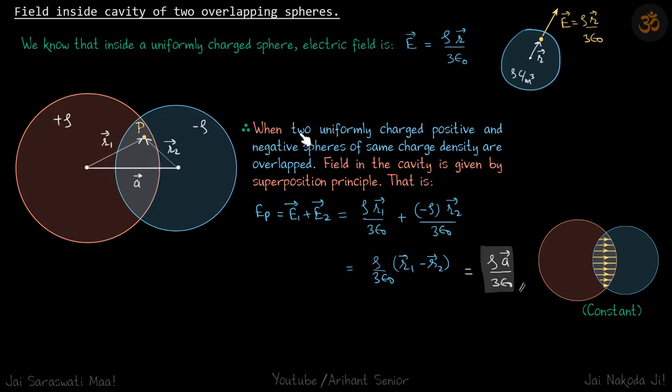Therefore, when two uniformly charged positive and negative spheres of same charge density are overlapped, field in the cavity is given by superposition principle, that is E_P at point P is E1 plus E2.